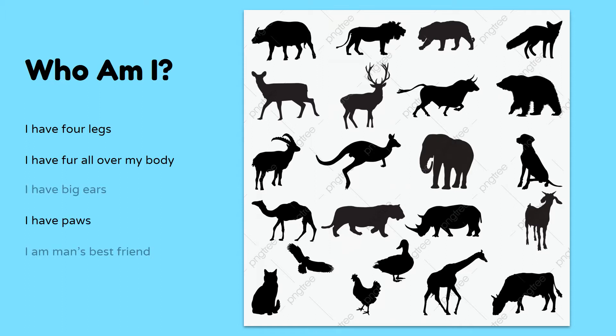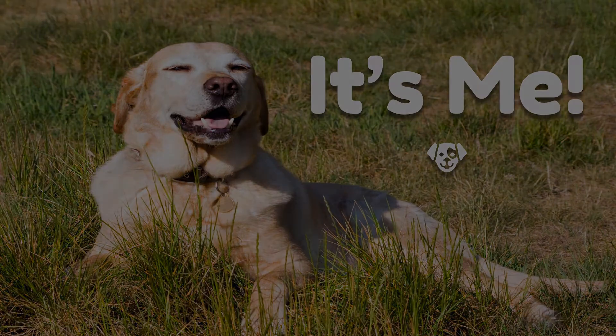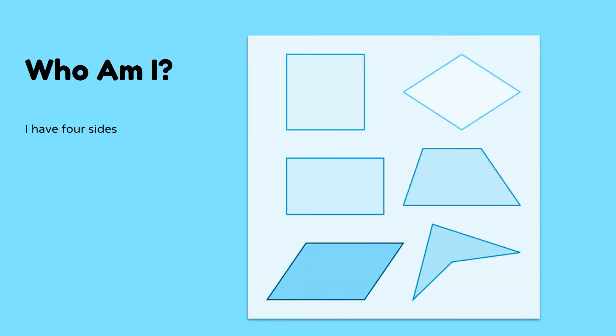Now you know, right? A dog. We needed more than one characteristic to clearly identify it. In geometry, the same thing can happen with plain figures. If I told you I was thinking of a four-sided figure, you may know that I'm thinking of a quadrilateral, but you won't know exactly how it looks because I didn't give enough information.